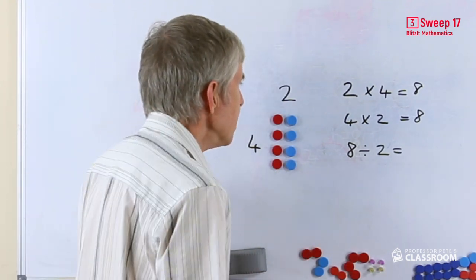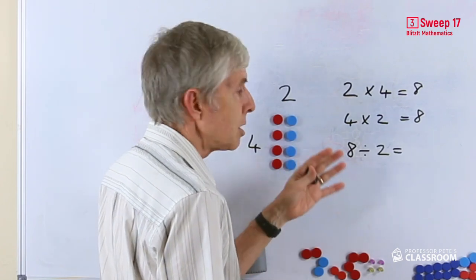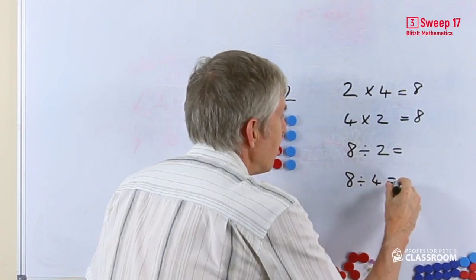So eight divided by two can be partition or quotation depending on the story that you tell and then we have the other turnaround which is eight divided by four.